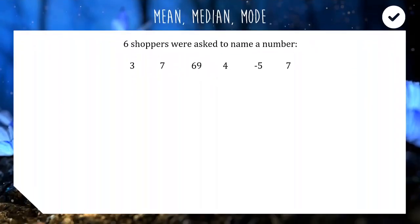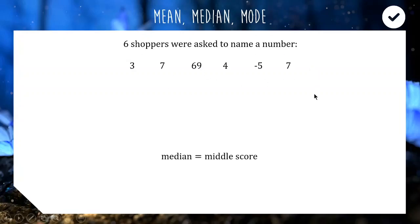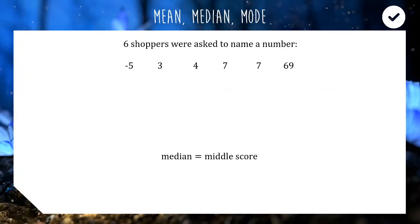Another example with median because they can get a bit tricky. A separate survey asked six shoppers to name a number: we had 3, 7, 69, 4, negative 5, and 7. We're trying to find the median. First thing: the median needs to be the middle when they're in order, and currently they're in random order. So first I'm going to put them in ascending order from smallest to largest. Now we need to find the score which splits the data set in two. If we pick the four, there are two on the left and three on the right — hasn't split it. Same with seven.